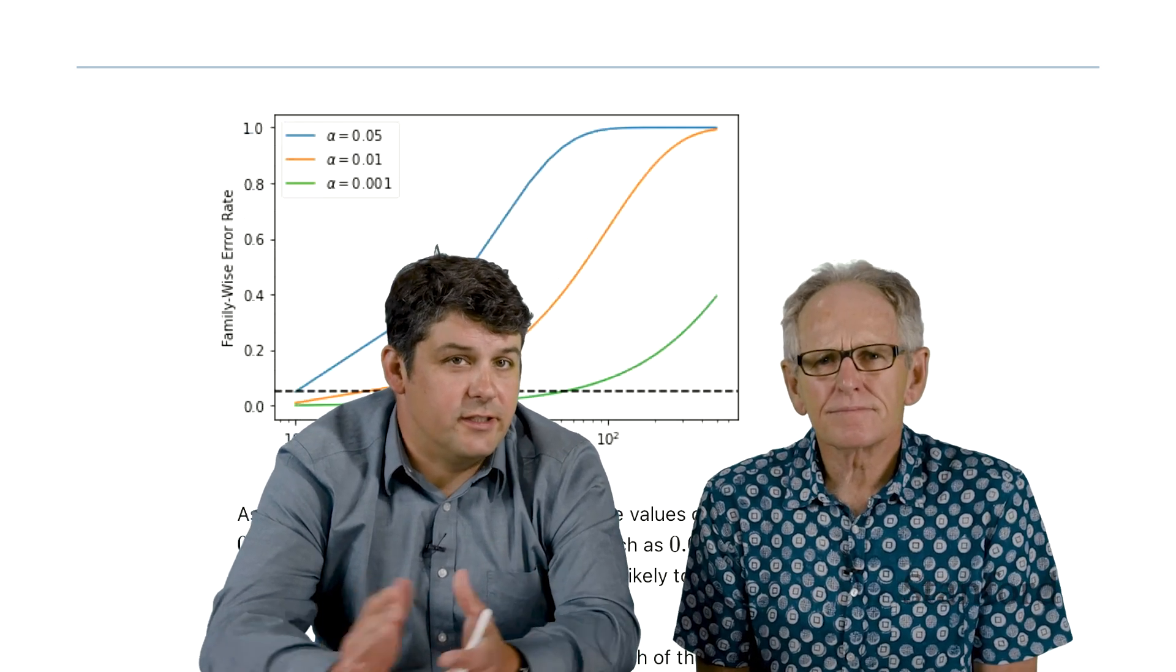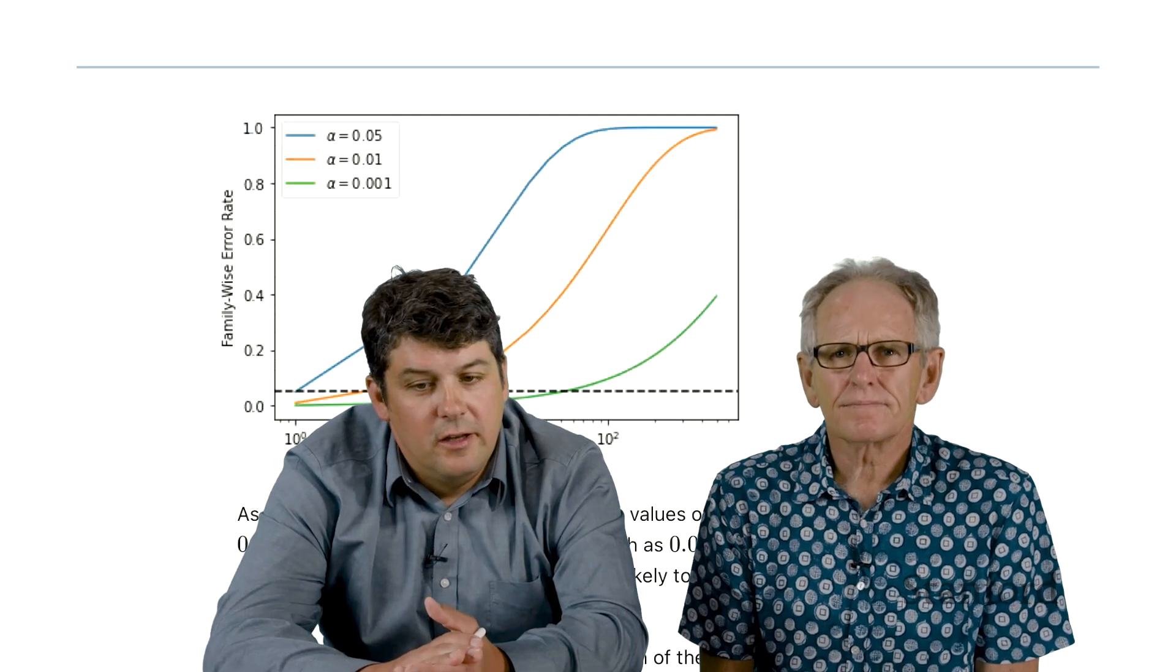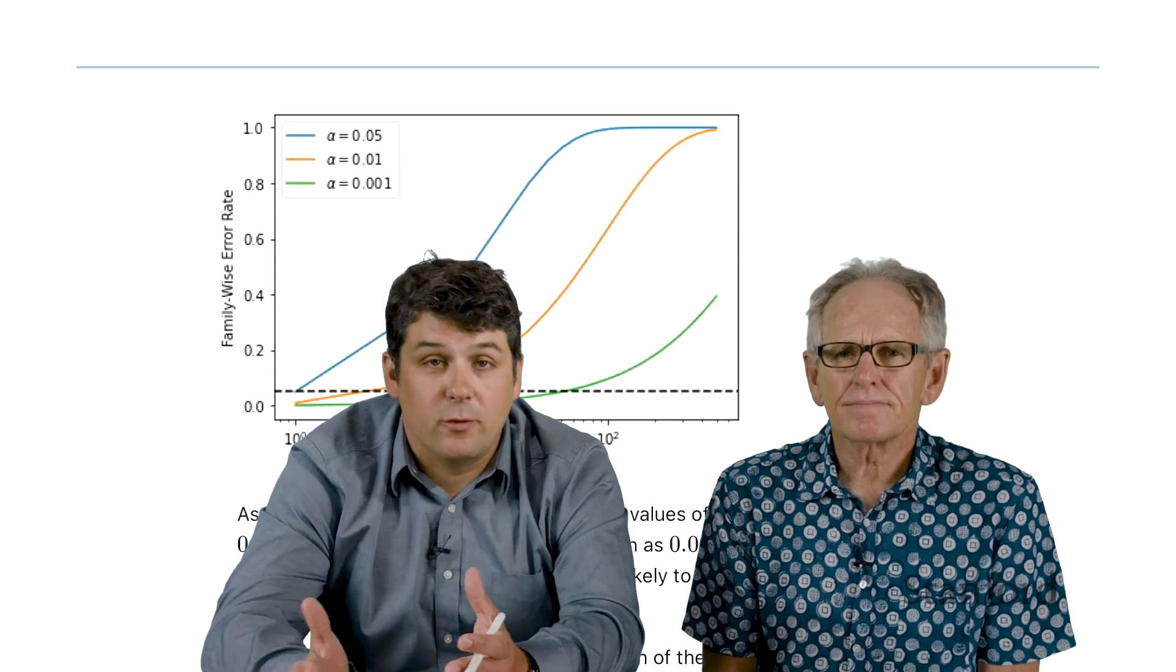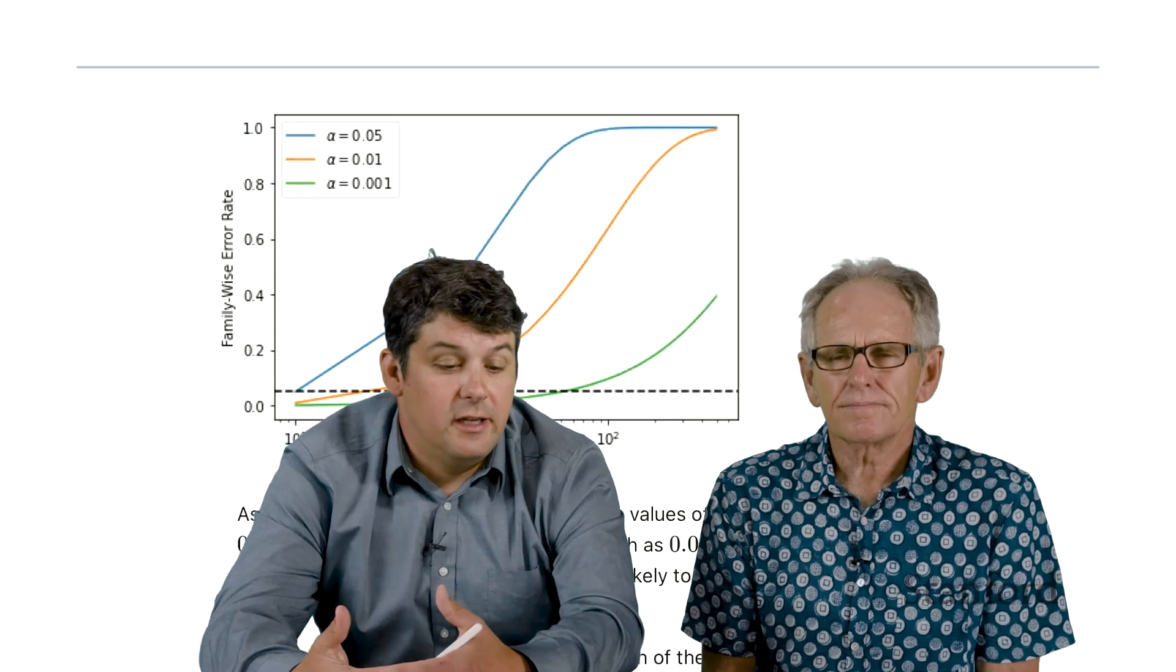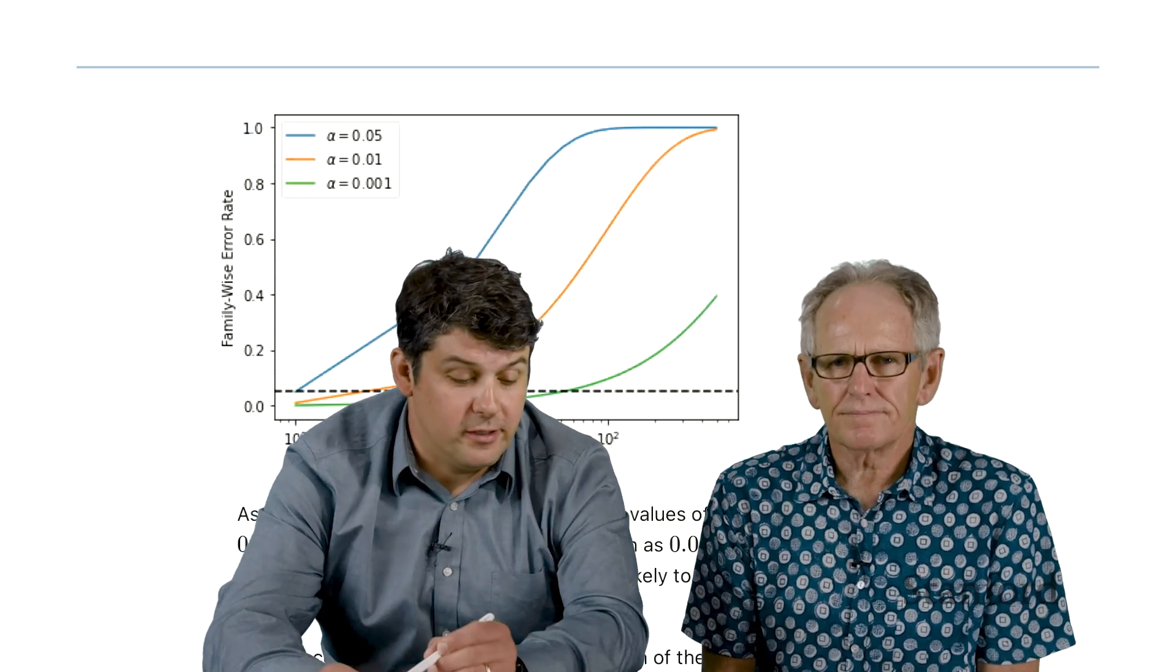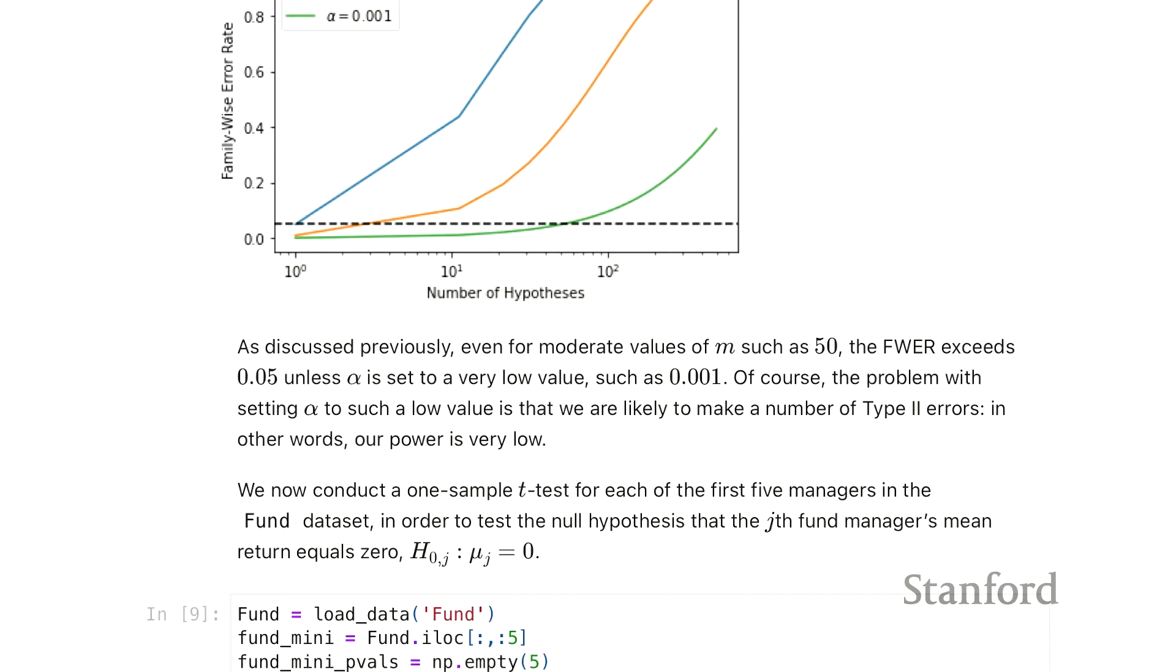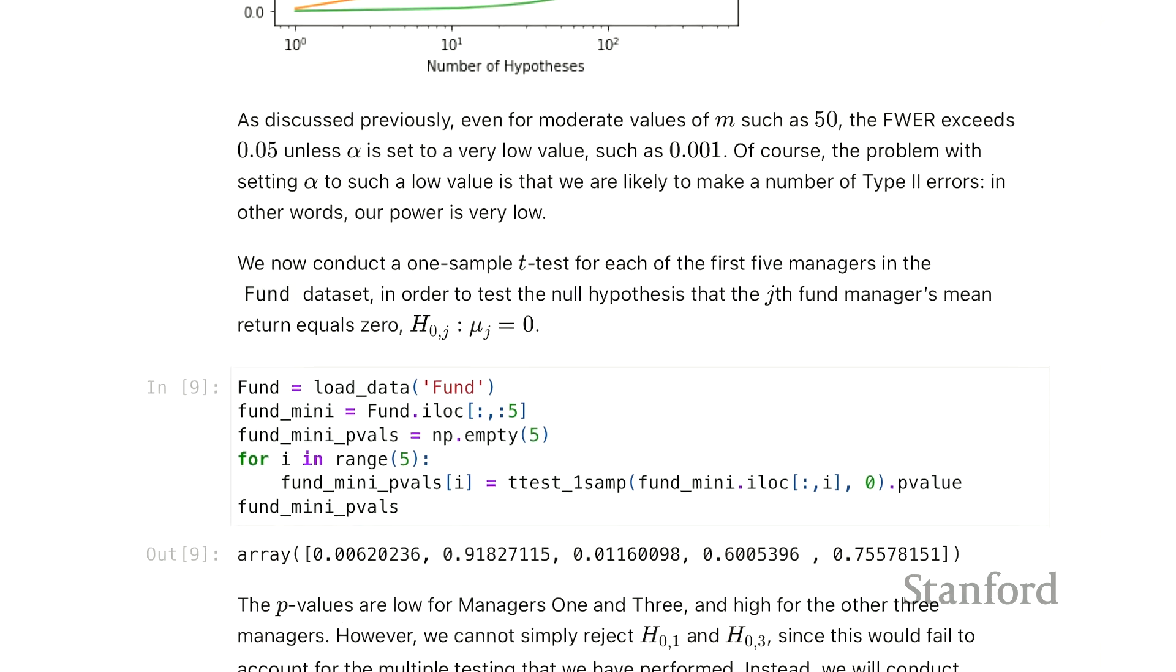So clearly, that's very strict. It puts a high burden on the hypothesis whose null is false, or the alternative is true, because they have to have small p-values in order to get declared significant, or in order to not reject their null hypotheses.